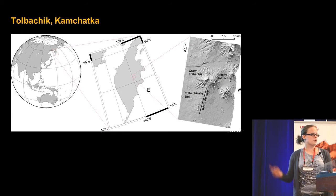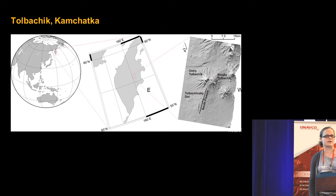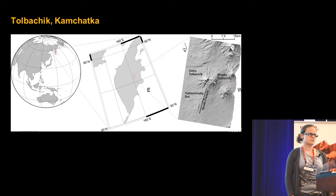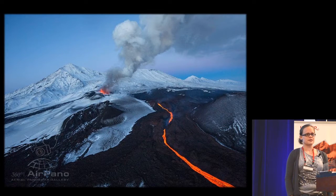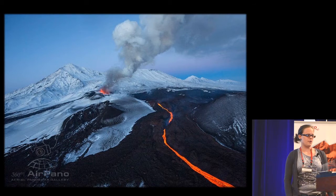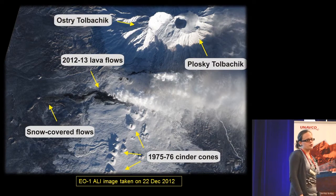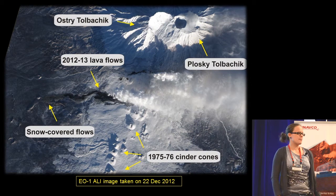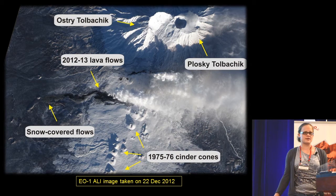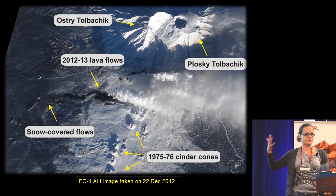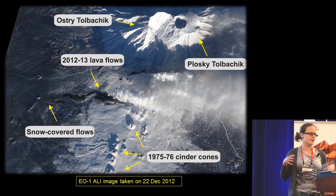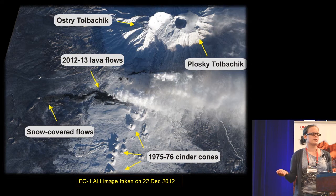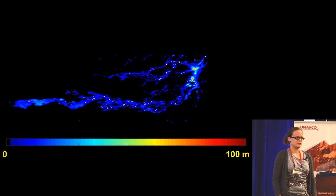It is shown for Tolbachic volcano in Kamchatka that erupted in 2012-13 for about nine months, and very fluid basaltic lava flows effused from a fissure. I show you here an optical image, and you can see why we use radar data, because we have a lot of fume in the datasets. You cannot use optical images all the time, and you cannot use them to calculate volumes, which we are very much interested in.